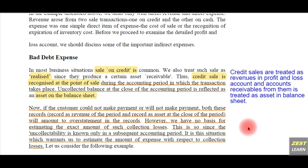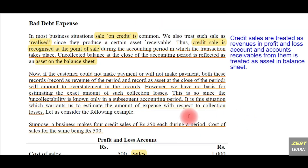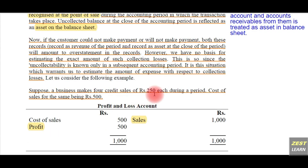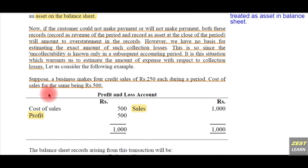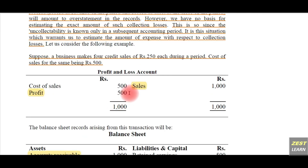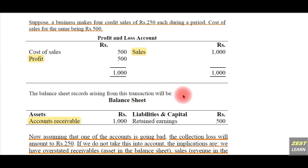The amount which is to be received, also called accounts receivable, is treated as an asset in the balance sheet. For example, suppose a business makes four credit sales of 250 rupees each during a period, with cost of sales being 500 rupees. Therefore sales revenue is 1,000 rupees and the total cost of sales for generating this revenue is only 500 rupees, giving a profit of 500 rupees.